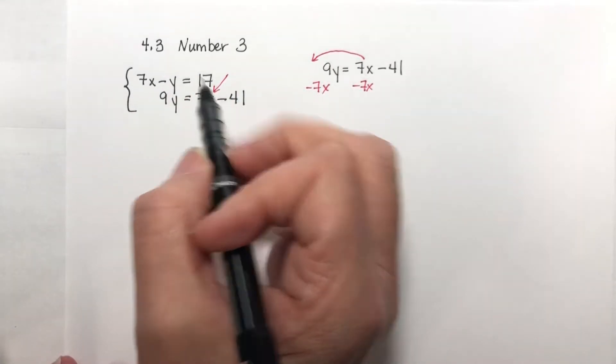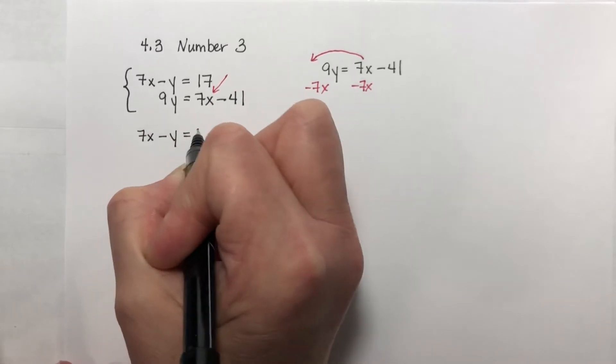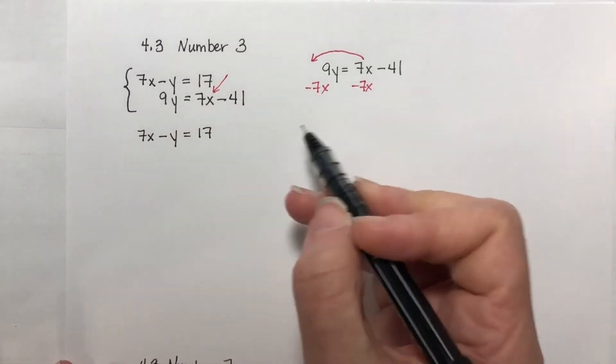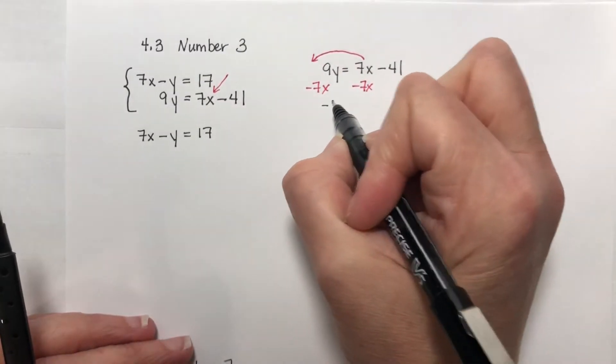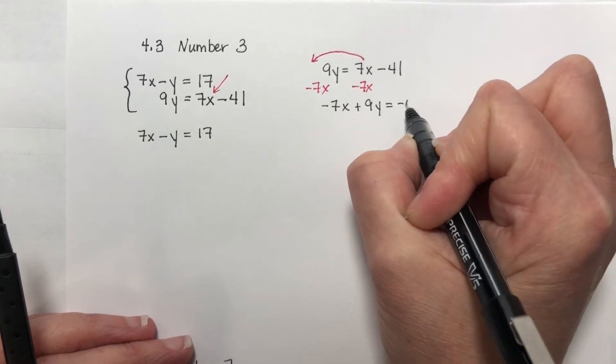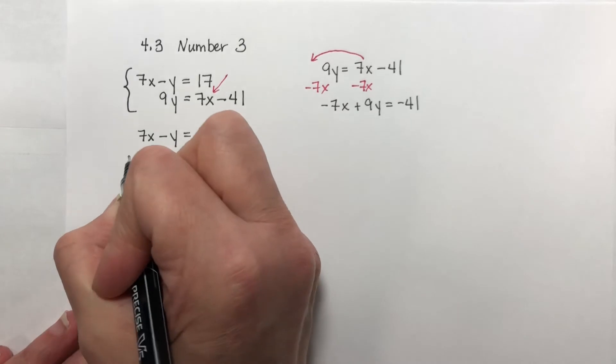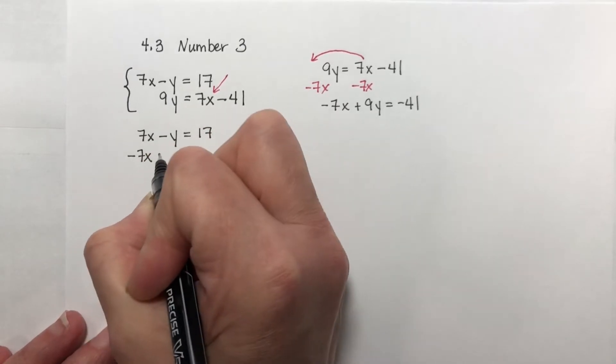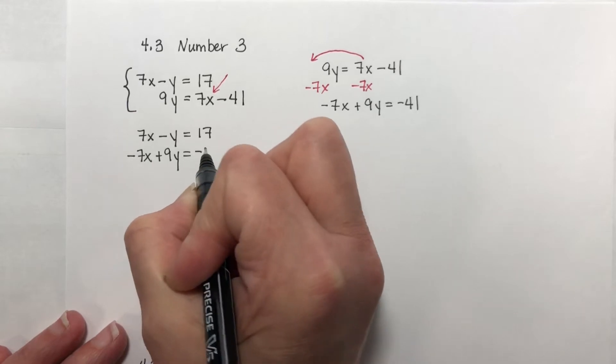And so my first equation is 7x minus y equals 17. My second equation is going to be negative 7x plus 9y is equal to negative 41. So right here, negative 7x plus 9y is equal to negative 41.